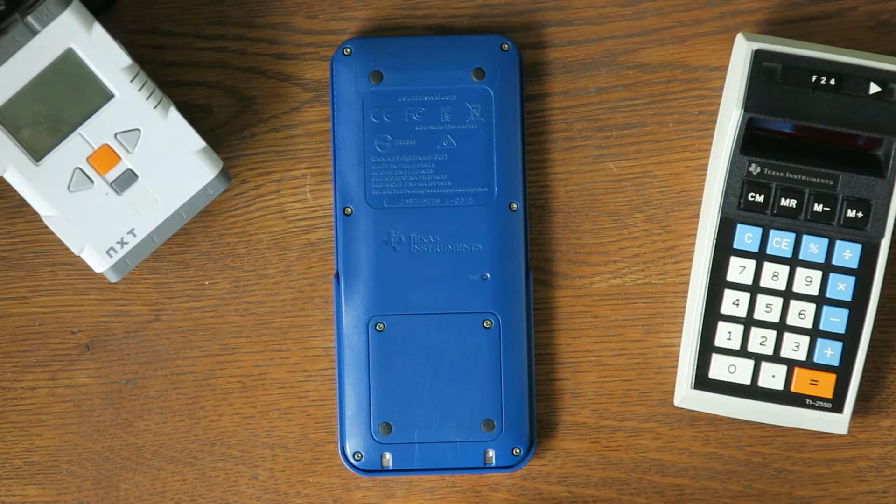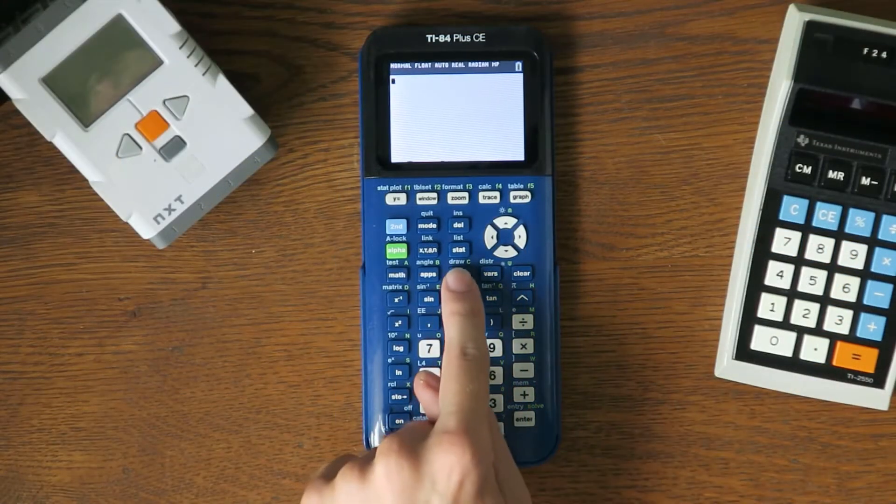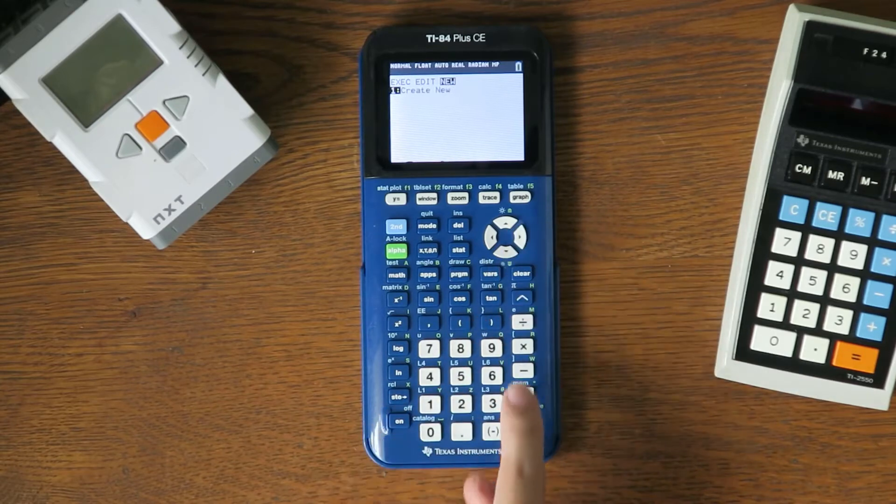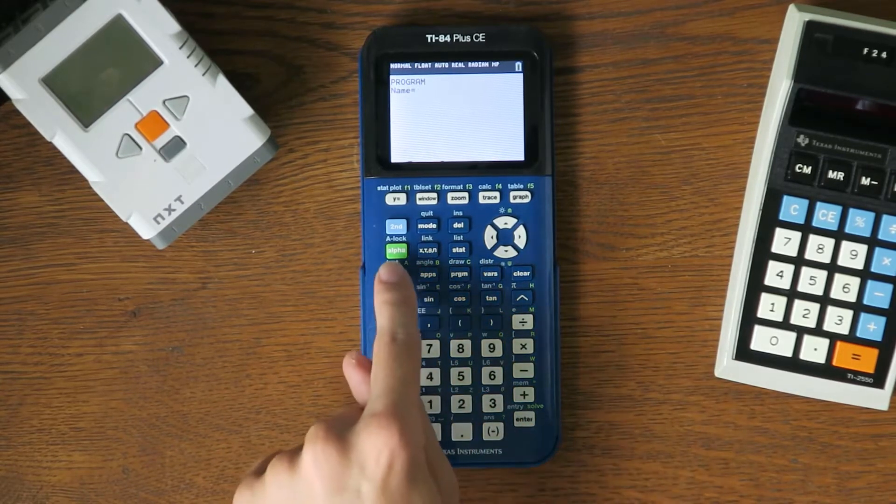Okay, first you need to press the program button, then scroll over to new and press enter. Type in the letter A and press enter again.